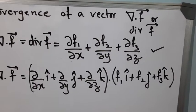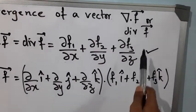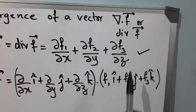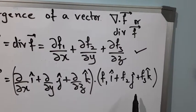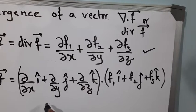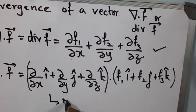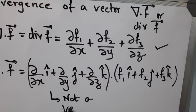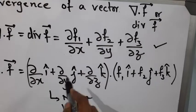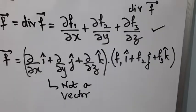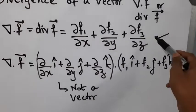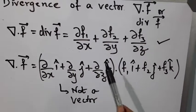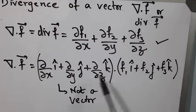If we look at the second line that we have written, the result on the right-hand side looks similar to a dot product, but remember this is not a vector. It is a vector differential operator, but the definition of divergence looks similar to a dot product of this.